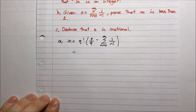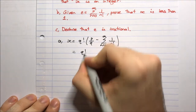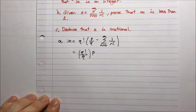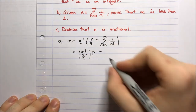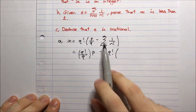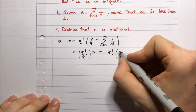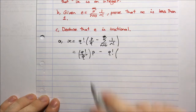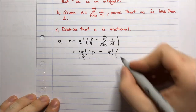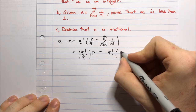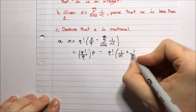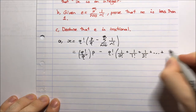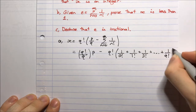Let's expand this bracket and distribute the q factorial through. We get q factorial divided by q times p, which simplifies, minus q factorial times the partial sum. Writing out the terms: 1 on 0 factorial, plus 1 on 1 factorial, plus 1 on 2 factorial, and so on, up to and including 1 on q factorial.